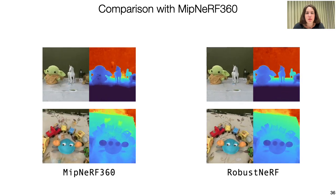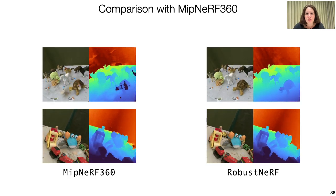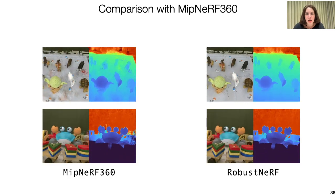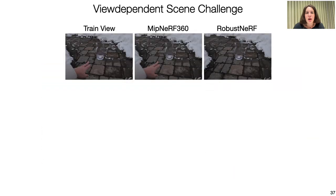RobustNERF is only a simple change in the loss function and therefore easily adaptable for many underlying NERF models. For our experiments, we replaced the MIPNERF 360's loss function in their codebase.